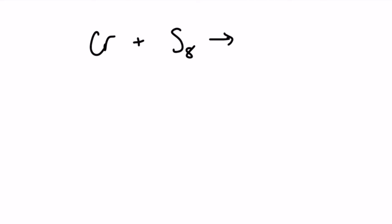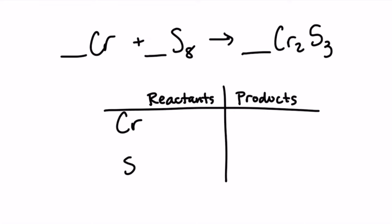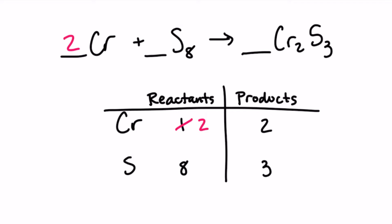Our next reaction involves chromium plus sulfur to make CR2S3. Since chromium doesn't have a subscript, there's only one. Sulfur however has eight in the reactant. Looking at the product side, I noticed that CR has a two and S has a three, so there are two and three respectively. To start balancing, I'm going to start with chromium and add a two in the reactant. That doubles the chromium from one to two. And then I have eight sulfur in the reactant and three sulfur in the product.